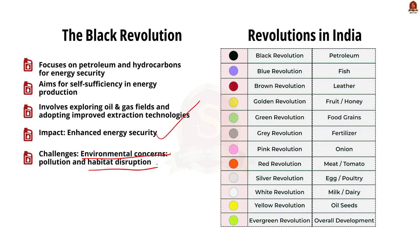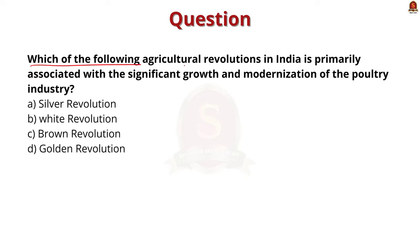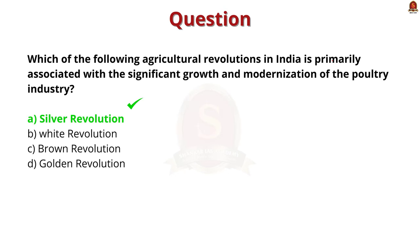Preliminary practice question: which of the following agricultural revolutions in India is primarily associated with the significant growth and modernization of the poultry industry? The correct answer is option A — the Silver Revolution. The Silver Revolution in India is linked to the remarkable expansion and modernization of the poultry industry, resulting in substantial growth in egg and poultry meat production. This revolution involved advanced breeding techniques, improved management practices, and adoption of modern technologies in poultry farming.